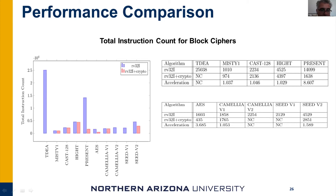In some ciphers — for example HIGHT, CAST, or MISTY1 — the difference between default and crypto instructions is really small. However, for AES the difference is huge, which is expected because the proposal has AES-specific instructions. A similar effect can be seen in other ciphers as well.